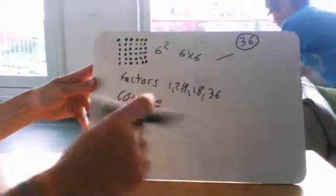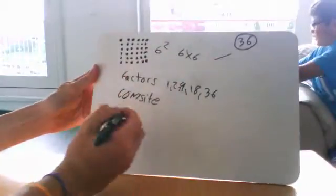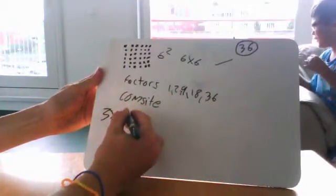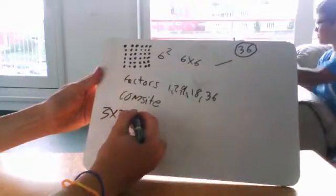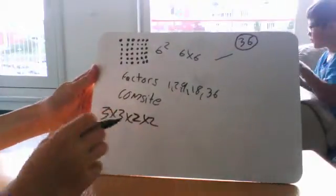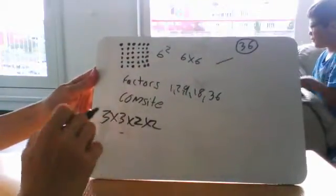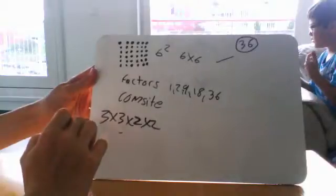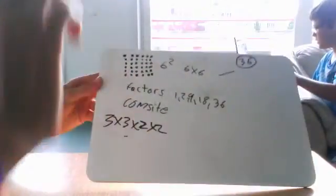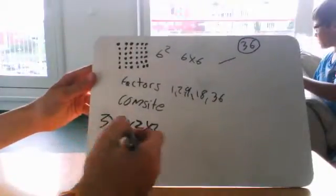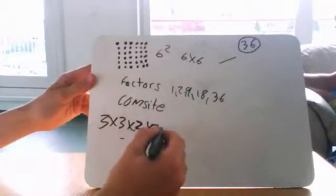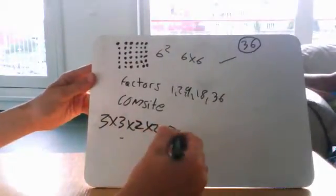This is the prime factorization of 36: 3 times 3 times 2 times 2. A prime factorization is the number which will equal this. If I times all of this, it would equal 36.